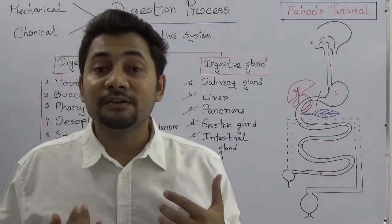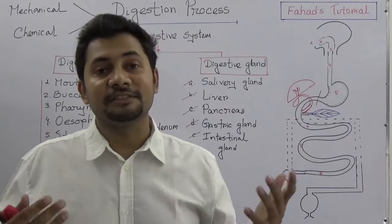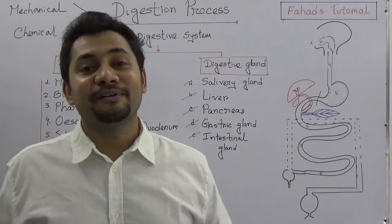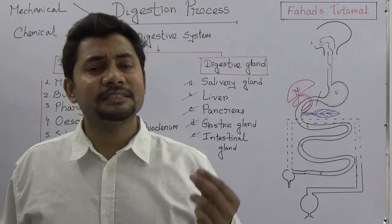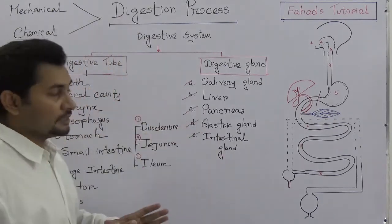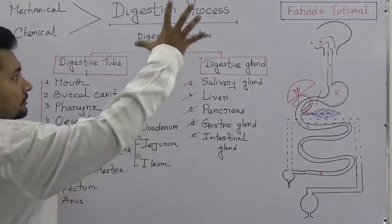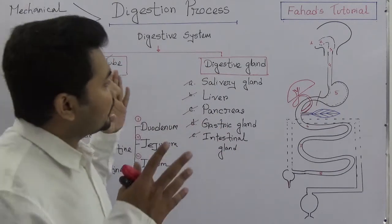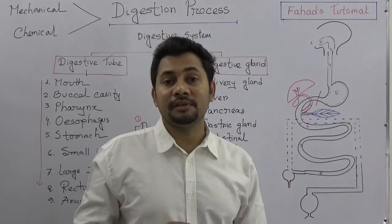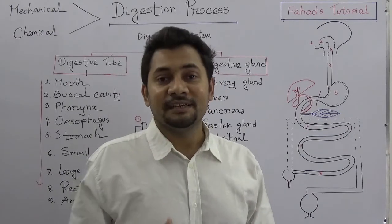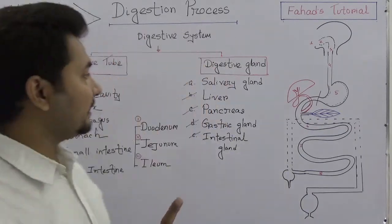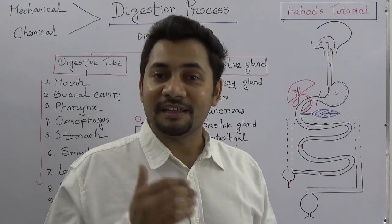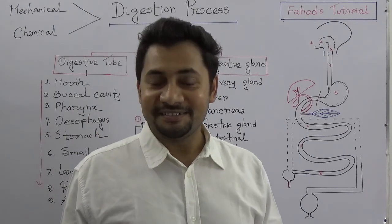You need to know what's going on inside our body because the human body is a magic box. The digestive system involves a huge number of chemical reactions, enzyme activities, hormone activities, and many other processes. You must know the tube and the glands. Draw the picture with your own hand — that will help you visualize the process. I will come up with the next tutorial on digestion in the mouth, small intestine, and large intestine. Take care and stay well.